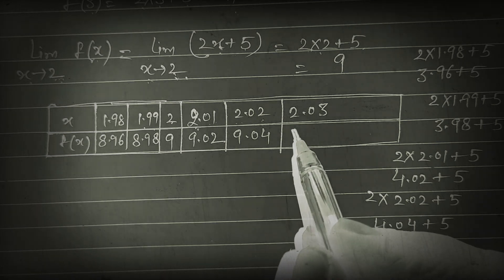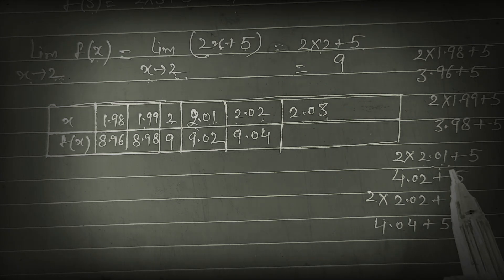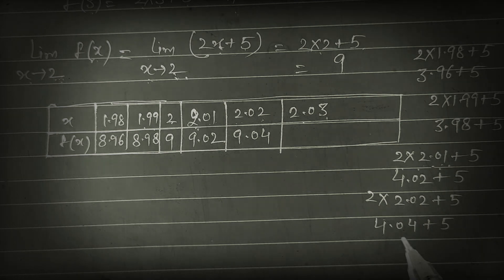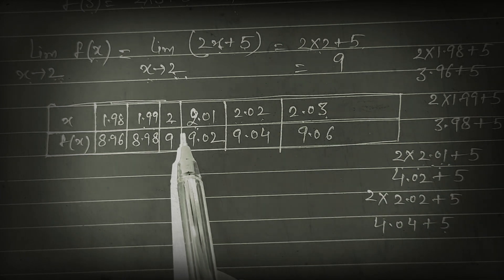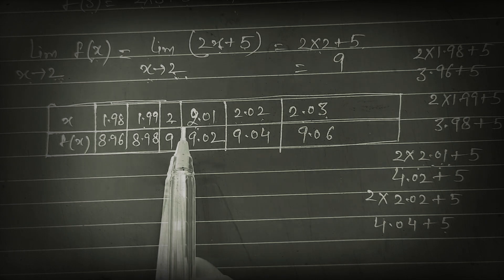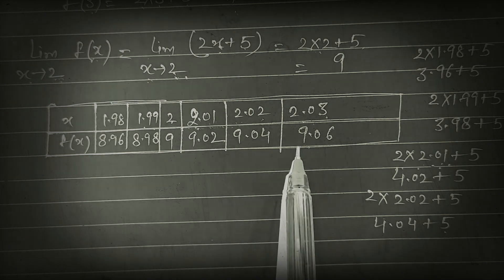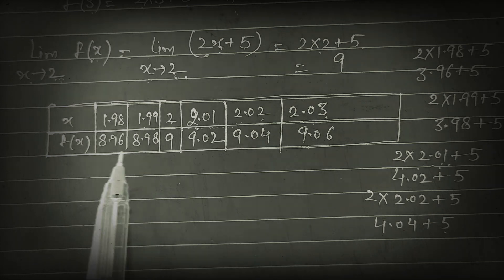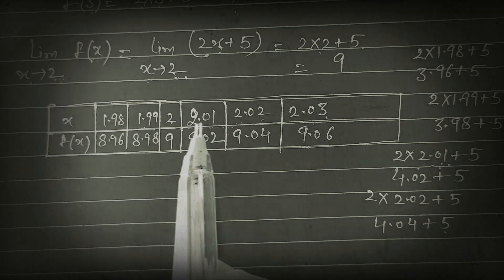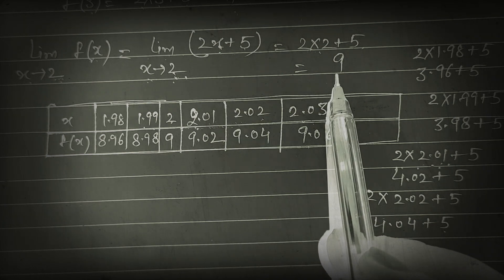In the same way, if we put x = 2.03, it will be 2×2.03 = 4.06 + 5 = 9.06. Look at this: if you take a value slightly greater than 2, close to 2, its value is approximately 9. And if you take slightly less than 2, its value is also approximately 9.